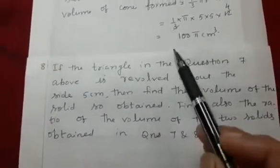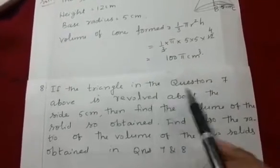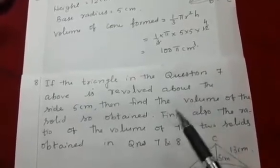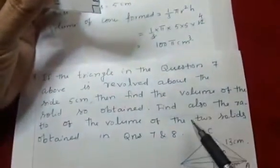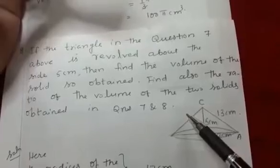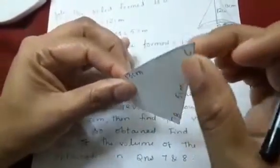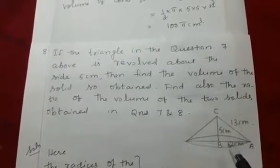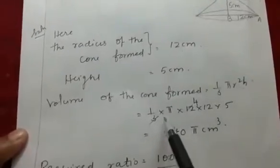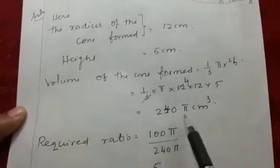Now let us discuss the 8th question, which is related to question 7. If the triangle is revolved about the side 5 cm, find the volume of the solid so obtained. In this case, 5 cm will be the height and 12 cm will be the radius. So radius = 12 cm, height = 5 cm, and volume of the cone = 1/3 × π × 12 × 12 × 5, which equals 240π cm³.